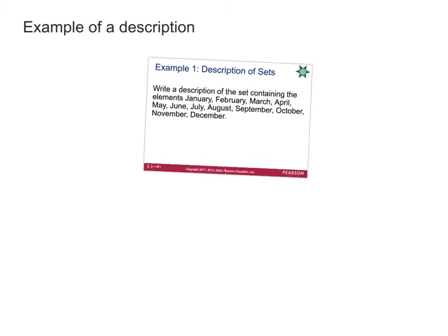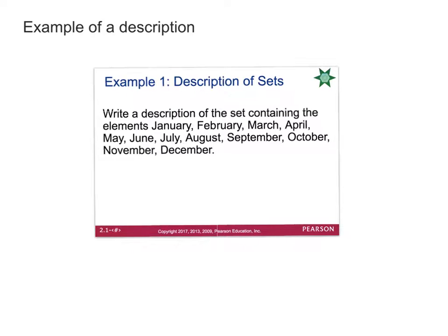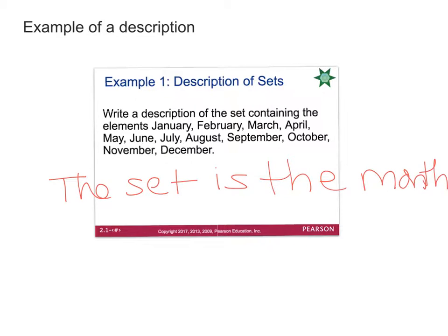When you're doing a description, it is essentially just a verbal sentence describing the list of elements that you have. For example, write a description of the set containing the elements January, February, March, April, May, June, July, August, September, October, November, December. If you had to write in one sentence what those elements were representing, you would probably say the months of the year. So the set in description form would be: the set is the months of the year. I think these tend to be the easiest, but you do have to describe it in a sentence.